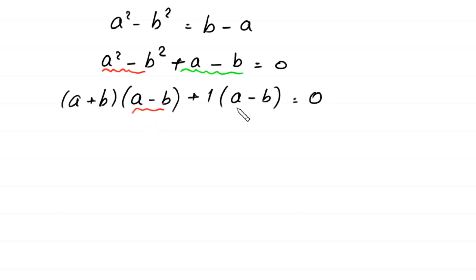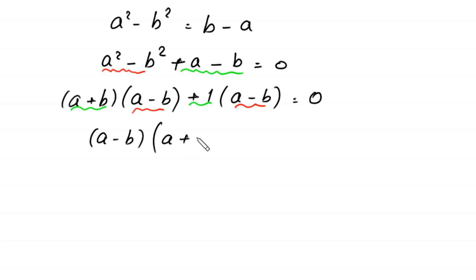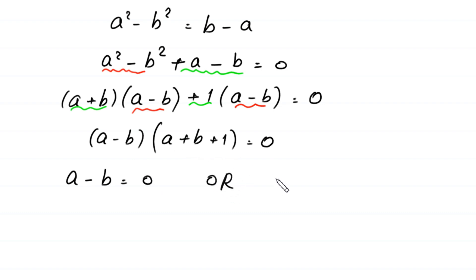This expression a minus b is a common factor. So we factor out a minus b, and in the bracket we are left with a plus b plus 1, equal to 0. From here, either a minus b equals 0, or a plus b plus 1 equals 0. From the first equation, b is equal to a.